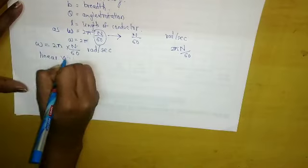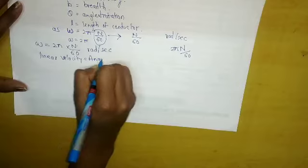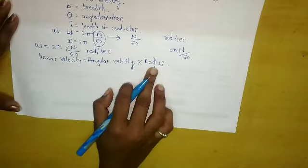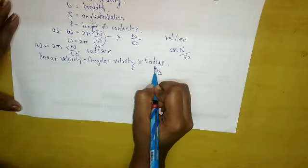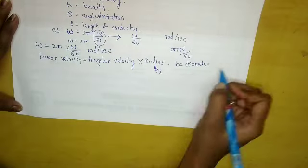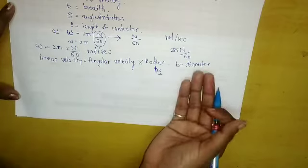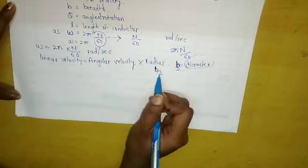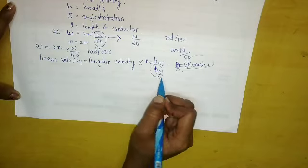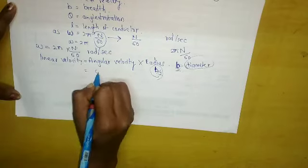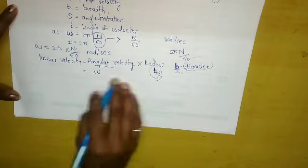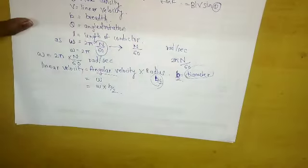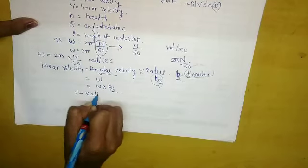Linear velocity equals angular velocity multiplied by radius. Our radius is b/2, because breadth b is considered as the diameter, and diameter divided by 2 gives the radius. So instead of radius, we substitute b/2. Therefore, linear velocity V = ω × b/2.